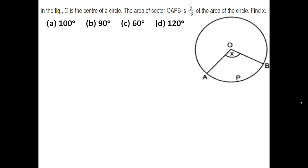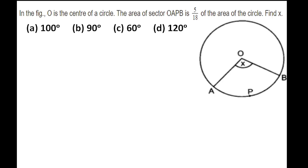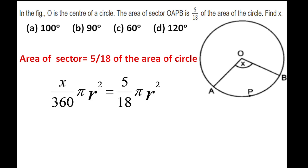Moving to the next one. In this figure, O is the centre. The area of sector OAPB is 5/18 of the area of the circle. We need to find x. Area of a sector = (x/360) × πr². This equals (5/18)πr² as given. Cancelling πr² from both sides and simplifying, x = 100. So the first option is correct.